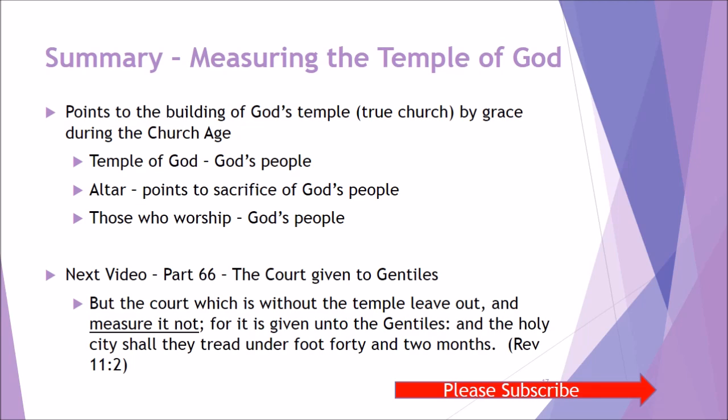In summary: the measuring of the temple points to the church age. The temple of God is God's people — we're seated in heavenly places with Christ in the Spirit while still in this world. The altar points to sacrifice; those who worship are God's people. The measuring of the temple points to the beautiful building of God's true church by grace during the church age. In the next video we'll look at the court outside the temple, which is not measured — it is given unto the Gentiles, who shall tread the holy city underfoot for 42 months. Measuring the temple is a beautiful picture of God's sovereign work in the church.